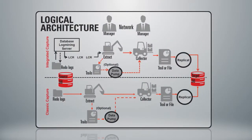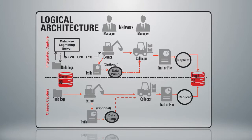I draw your attention to the slide you see before you. You have a source database on the left and a target database on the right. What Capture really does in Golden Gate is obtain all the changes that were made on the source database and put them in a format that it can share with the target database.